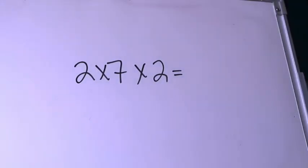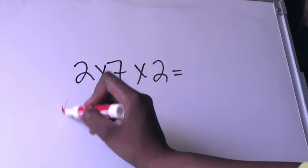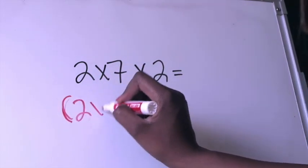Alright, here we have our second example and notice that in the second example, they haven't grouped any of your factors together just yet. They're leaving it up to you. This problem is 2×7×2. Immediately I know I definitely want to group my factors 2 together because I know my twos like the back of my hand.